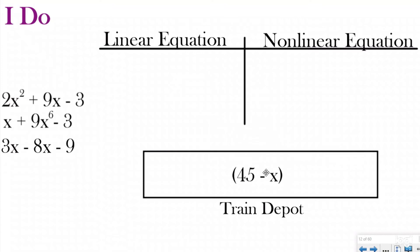Our first one is 45 minus X. When I look at these terms, I don't see any exponents. I don't see a 2 or 3 or raised to the fifth power, so we're going to call this a linear equation.